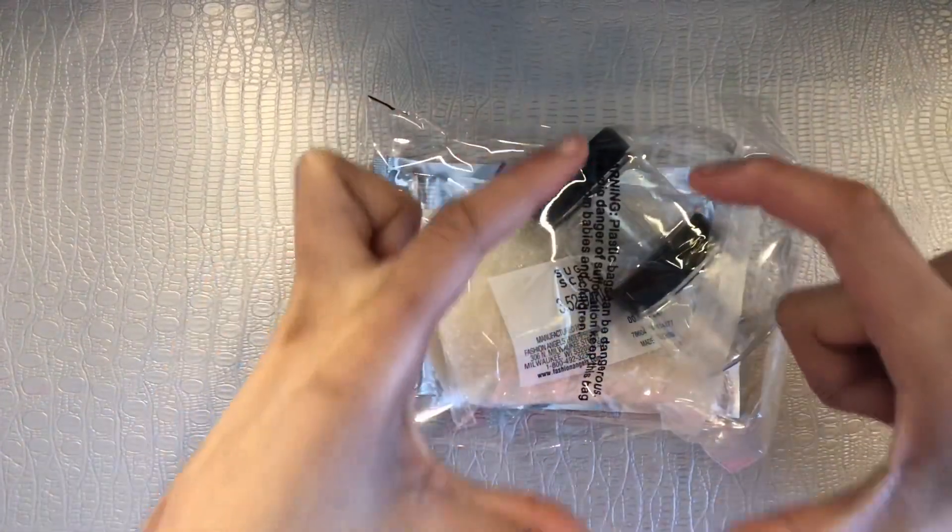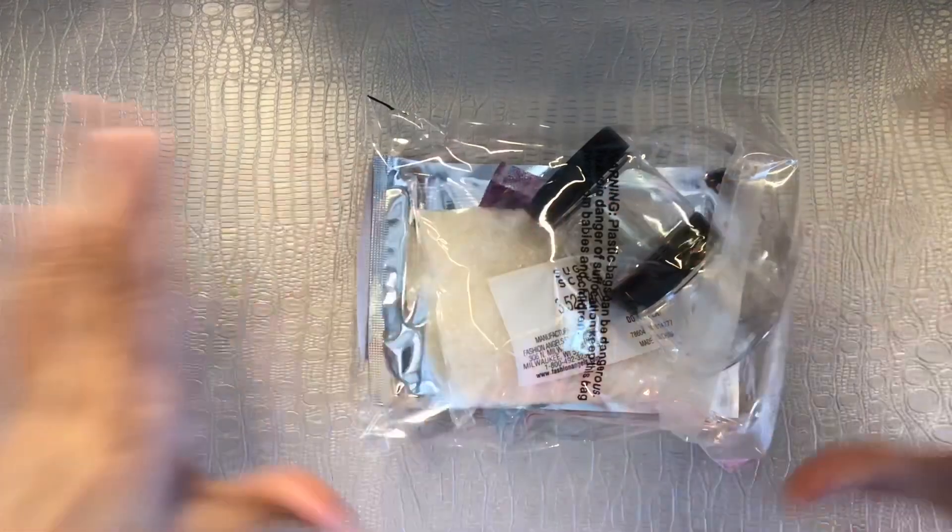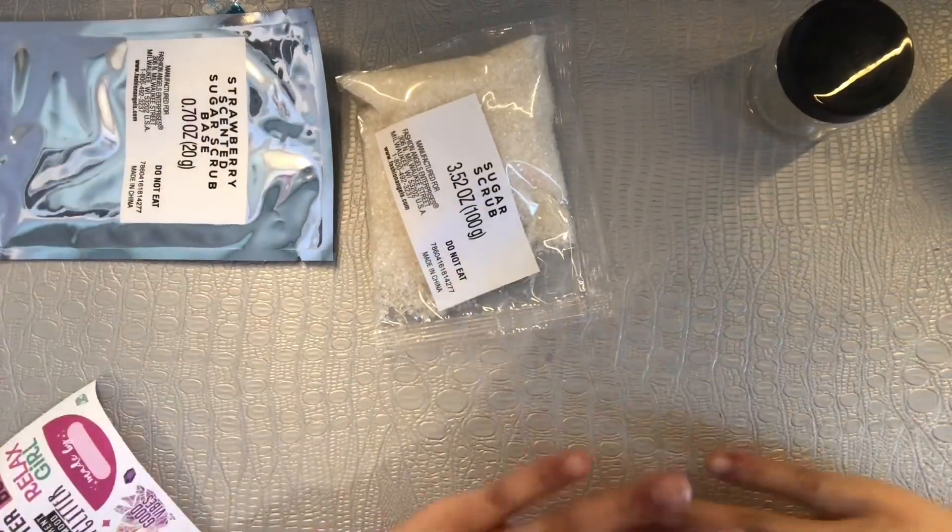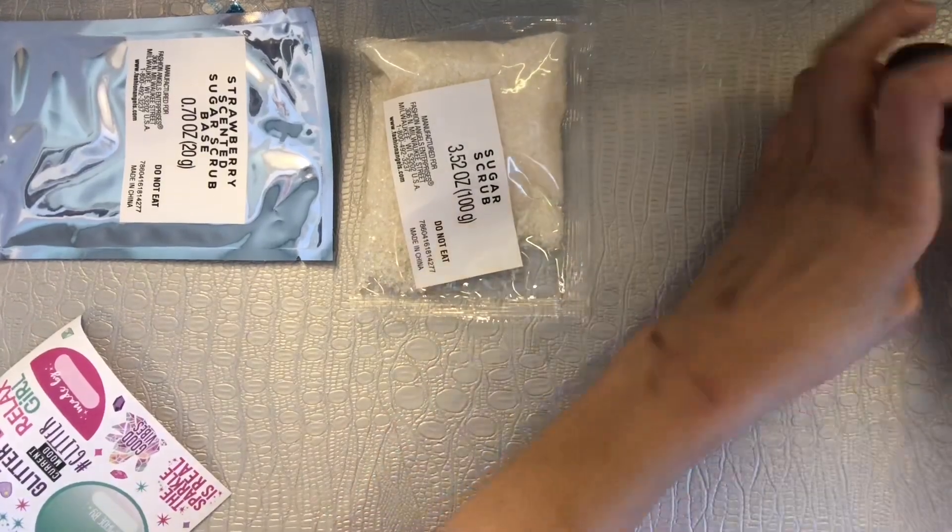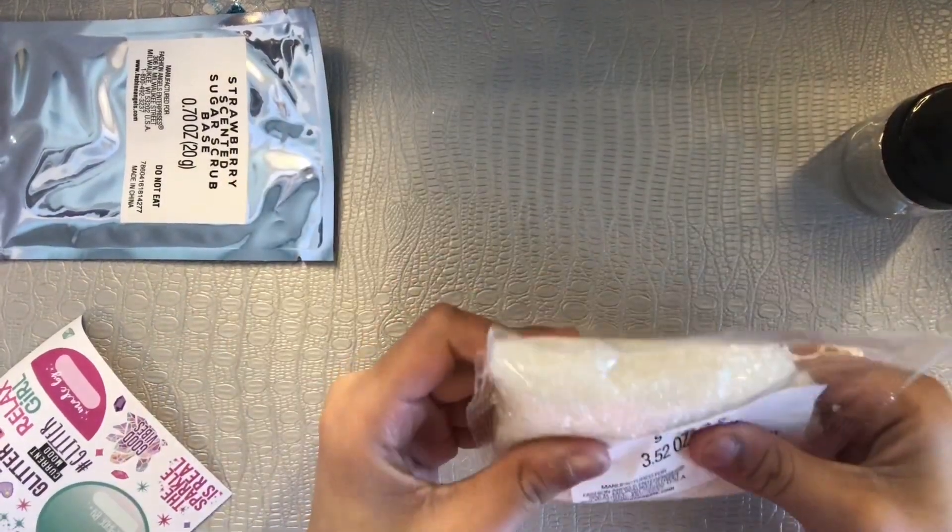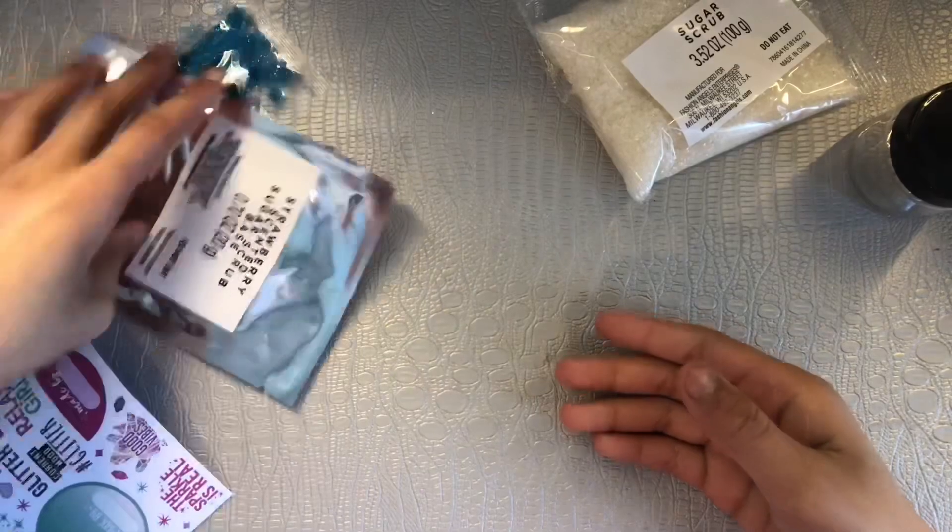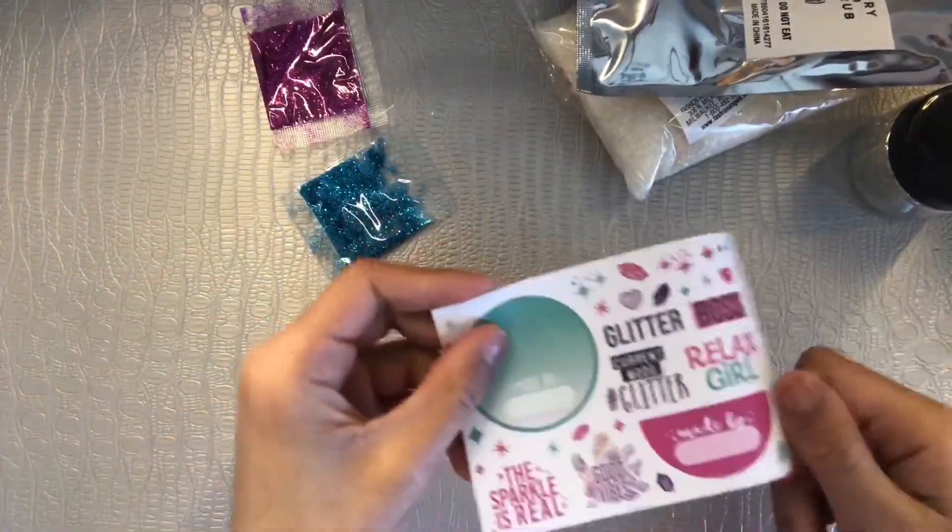I thought the jars were gonna be like this big, but okay. So this is what it comes with. It comes with two little jars, the sugar scrub, the sugar base, two packs of glitters, and some stickers.